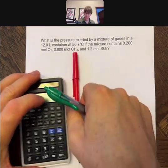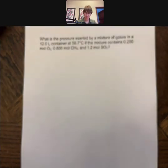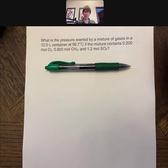This question says, what is the pressure exerted by a mixture of gases in a 12.0 liter container at 56.7 degrees Celsius if the mixture contains 0.200 moles of oxygen, 0.800 moles of methane, and 1.2 moles of sulfur dioxide?